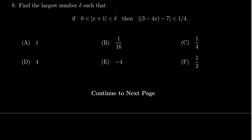We're asked to find the largest number delta possible such that when the absolute value of x plus 1 is between 0 and delta, that guarantees the absolute value of (3 - 4x) - 7 is less than 1/4.